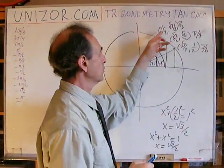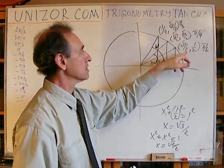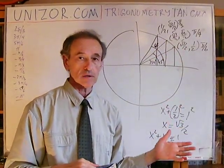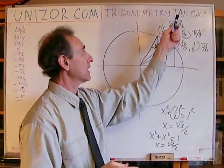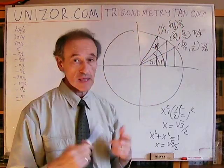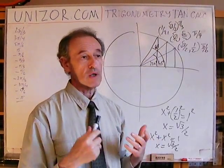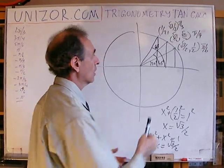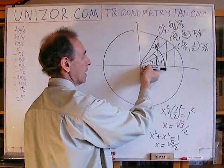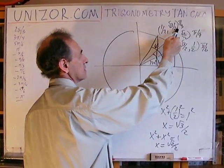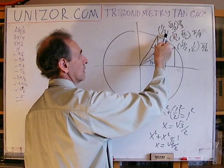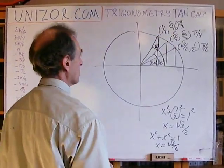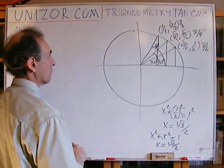Using the coordinates of points which represent the basic angles, I can find the value of the tangent. Because the definition of tangent, if you remember, is sine divided by cosine, or ordinate divided by abscissa. So I have to divide the second member of the coordinate pair by the first. It's very easy to calculate.